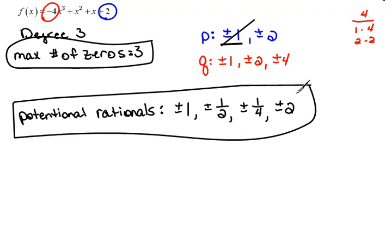And because that's all it asked, it just asked to find the potential rationals, not actually go through and find the zeros. So this is as far as we have to go.